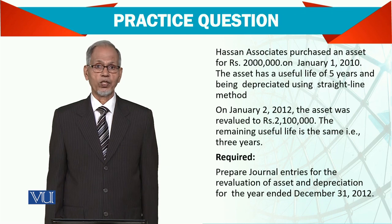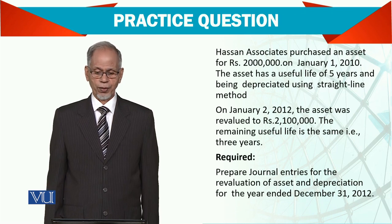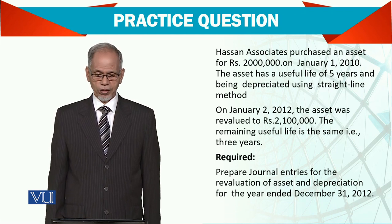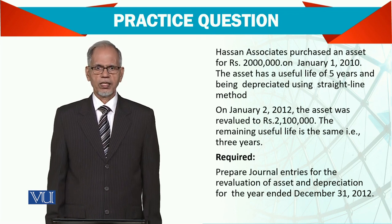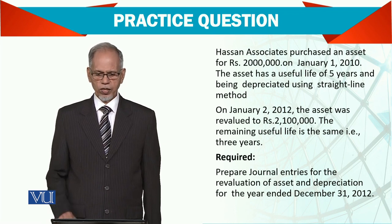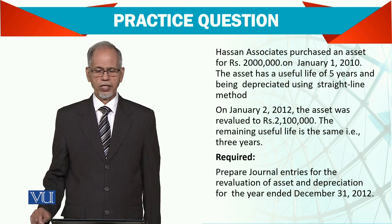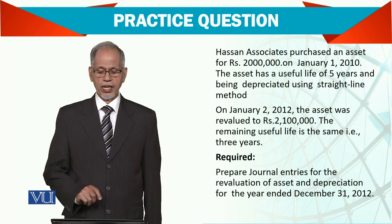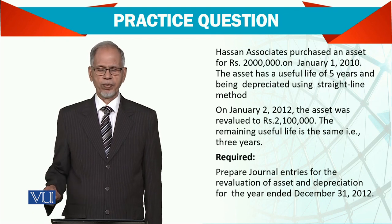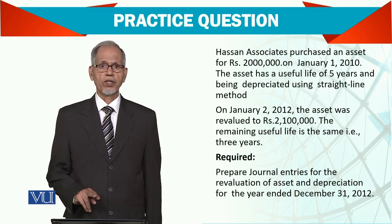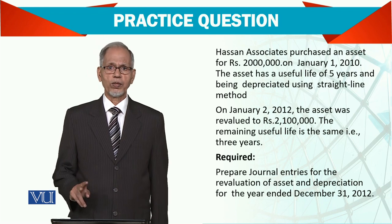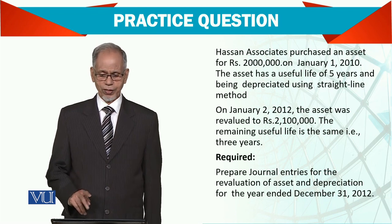Per year depreciation comes to 400,000. Now on January 2, 2012, two years of depreciation have passed — 400,000 multiplied by 2 — so accumulated depreciation comes to 800,000.